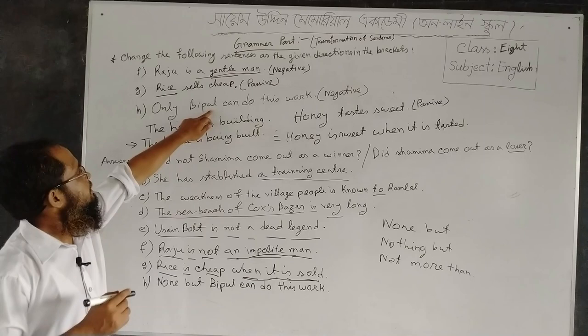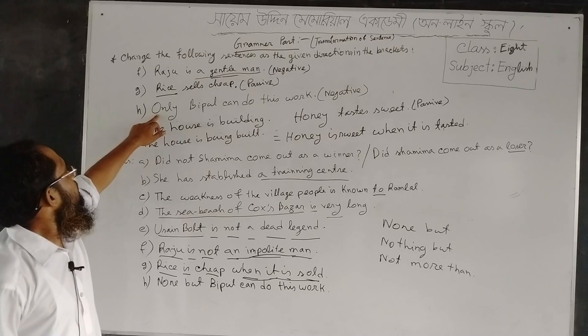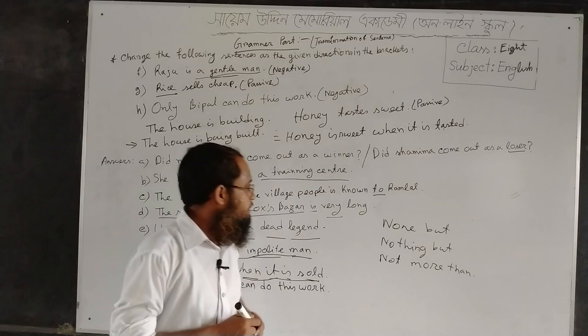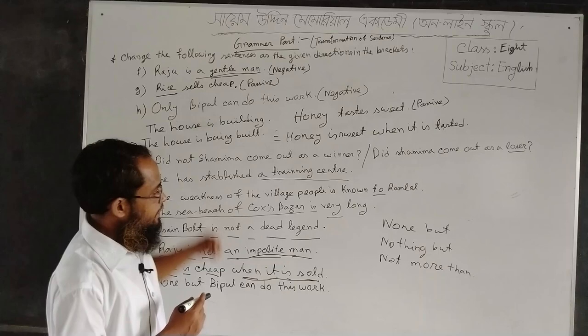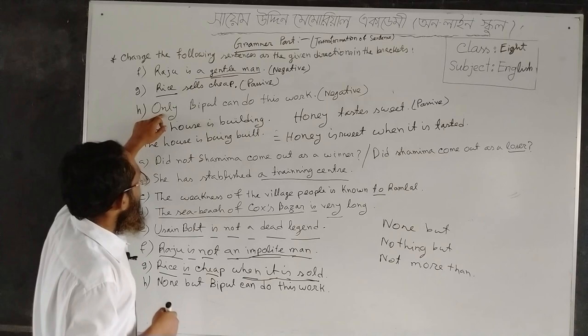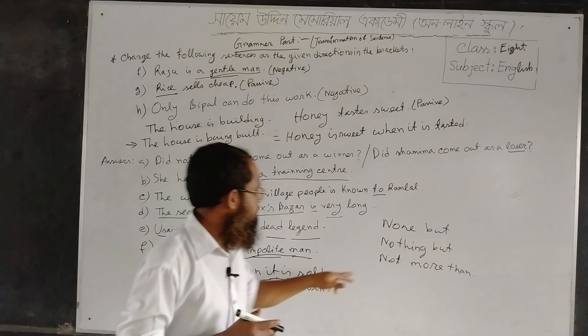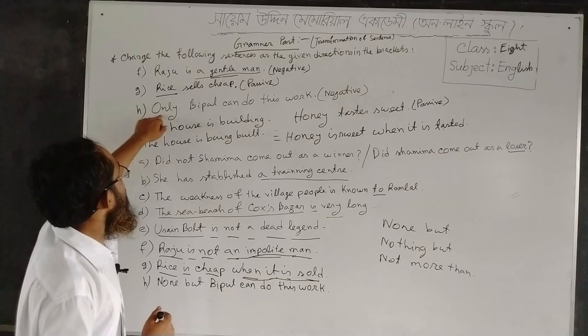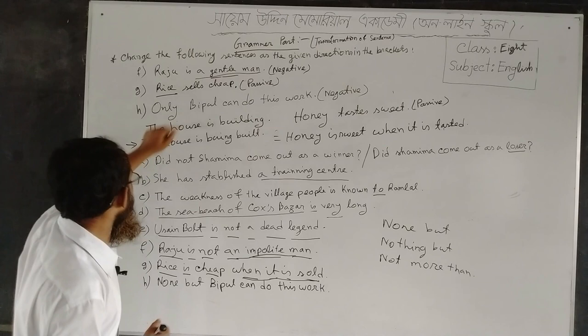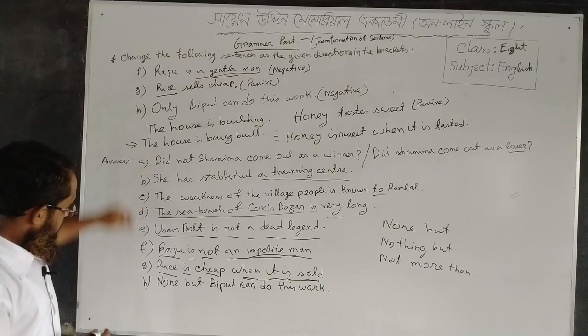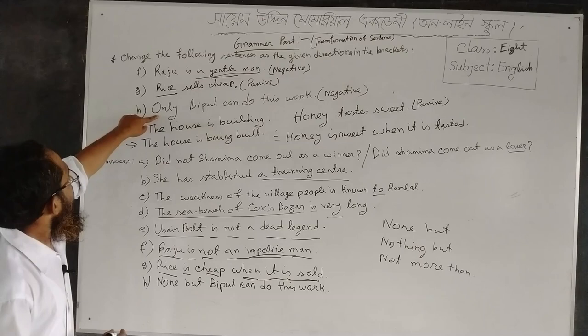Here 'only' is placed before 'Bipul'. 'Bipul' indicates the name of a man, so 'only' means a person — that is why you have to use 'none but'. If 'only' indicates any object, you have to use 'nothing but'. And if 'only' indicates any amount or number, you have to use 'no more than'. Here 'only' indicates Bipul, undoubtedly the name of a man, so you have to use 'none but' in the place of 'only'.